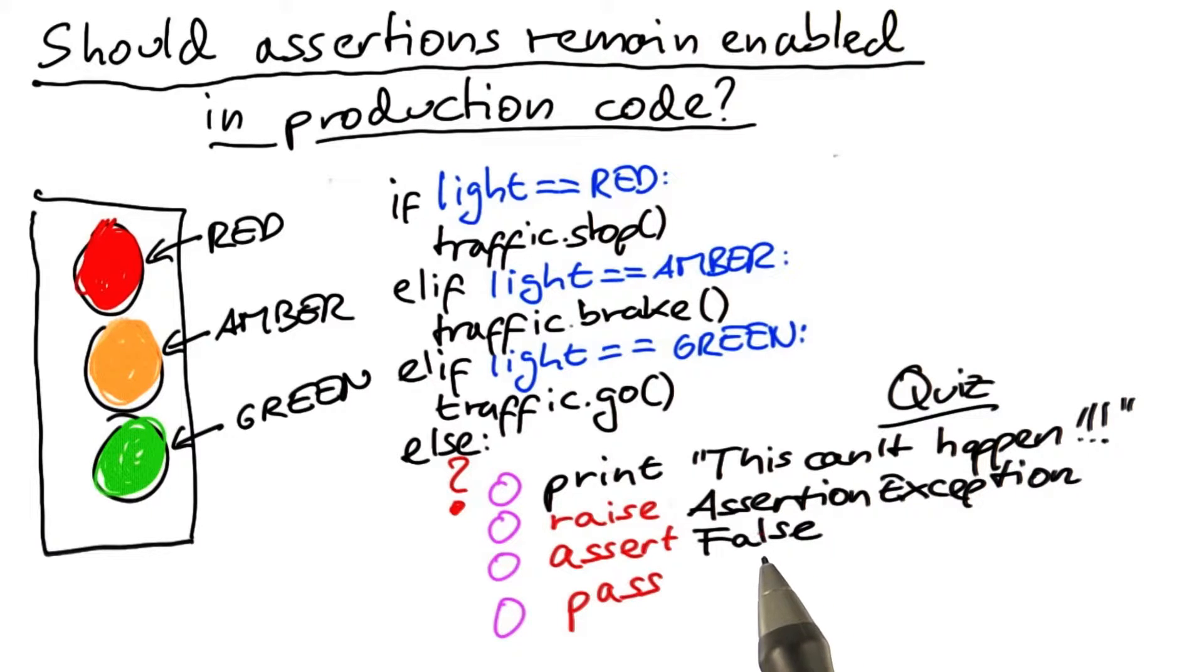for instance, when invoking the Python interpreter with minus O. However, in this particular situation, there is no reason to turn this assertion off, because, well, if it gets executed, then it raises an exception immediately, and if it does not get executed, then everything is fine, meaning that by turning it off, we don't get any savings.